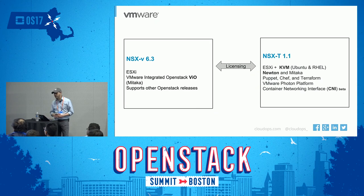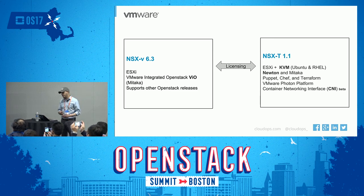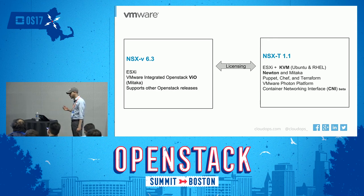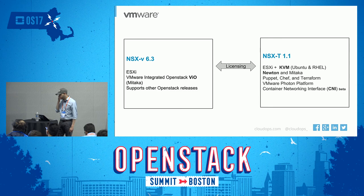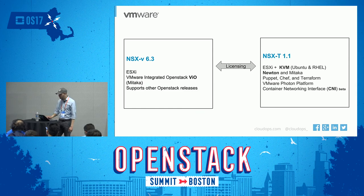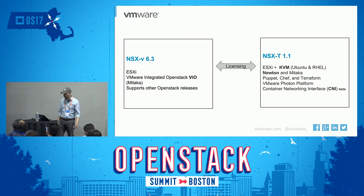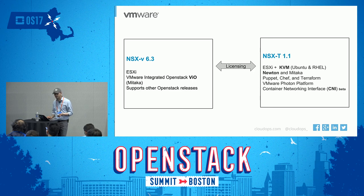We also have VMware with two options. NSX-V if you're only doing ESXi hypervisors, and if you're doing VMware Integrated OpenStack, this makes sense. You can also use it with other OpenStack releases like Red Hat Director or Mirantis. Or you can choose NSX-T version 1.1 if you're also doing KVM and not only ESXi. Newton and Mitaka are supported, and you can automate using different automation tools. One interesting feature in beta is the CNI to plug in Kubernetes into NSX. The licensing is interchangeable between NSX-V and NSX-T.